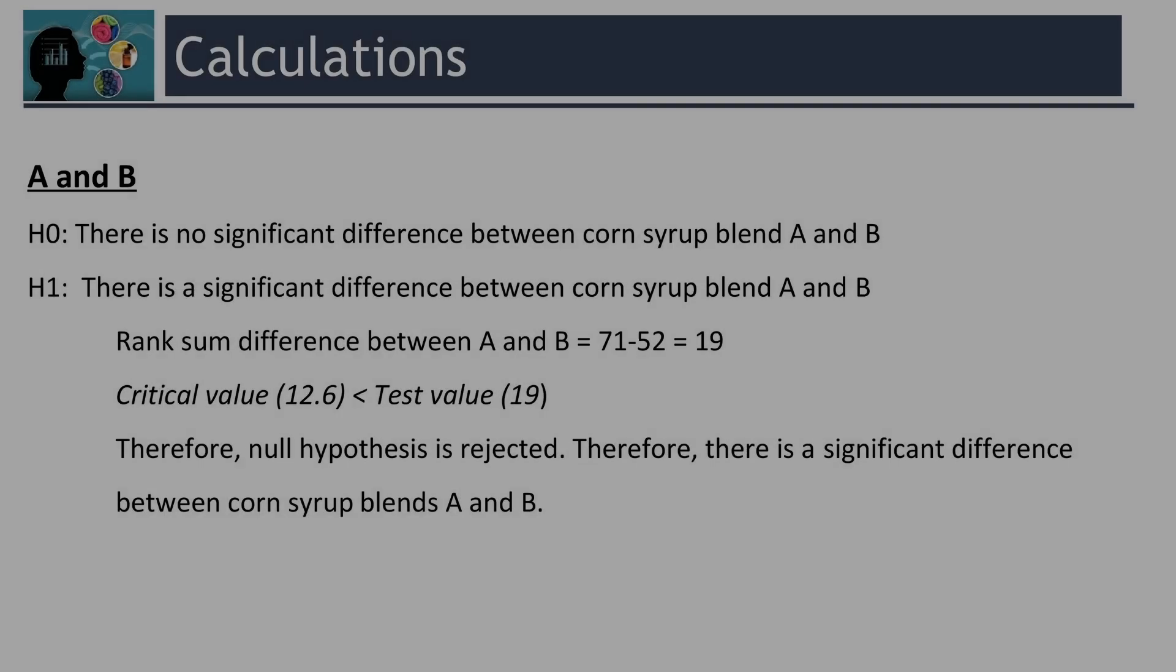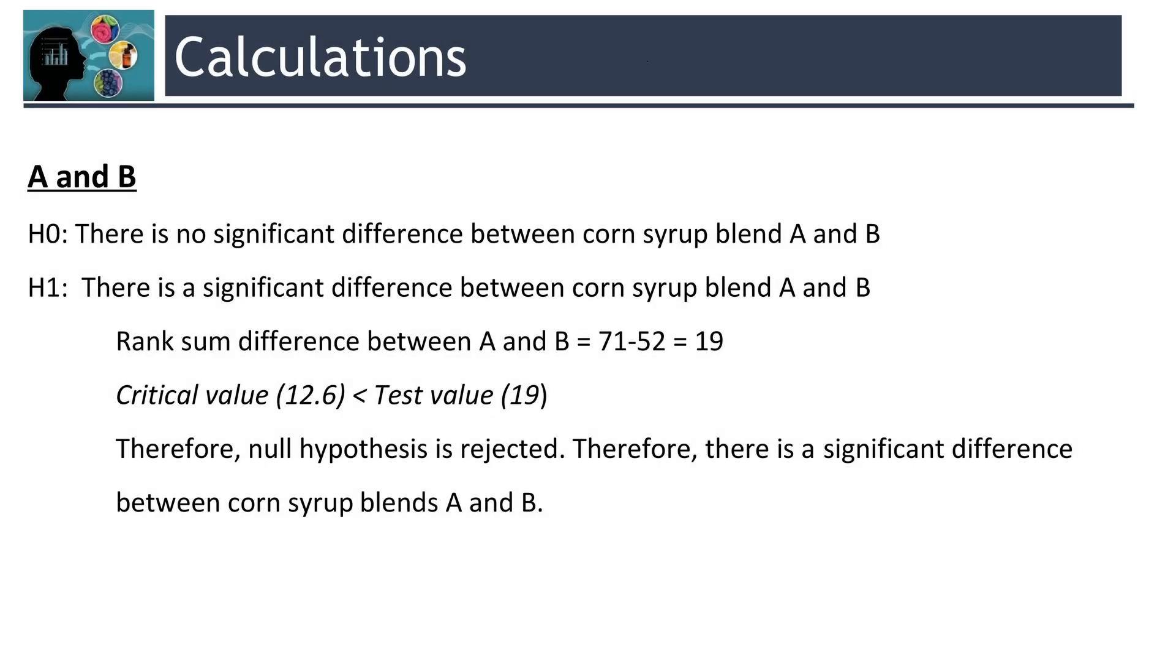Let's write the hypothesis. H0 is there is no significant difference between corn syrup blend A and B. H1 is there is a significant difference between corn syrup blend A and B. So, let's calculate the rank sum difference between A and B. It is 71 minus 52 equal to 19.